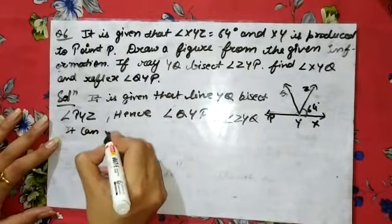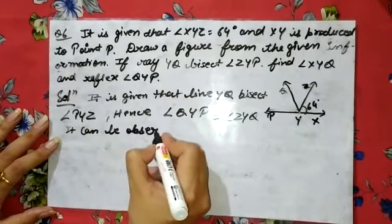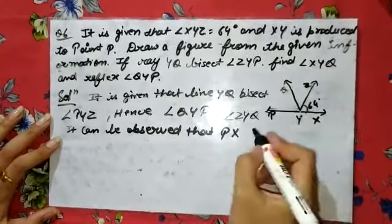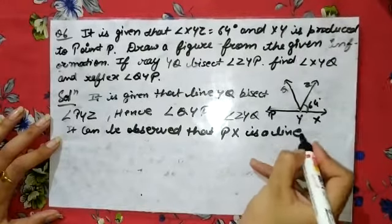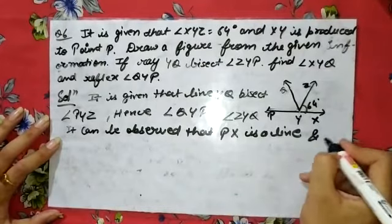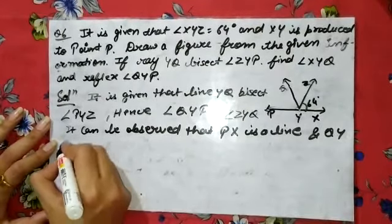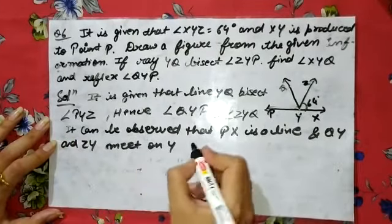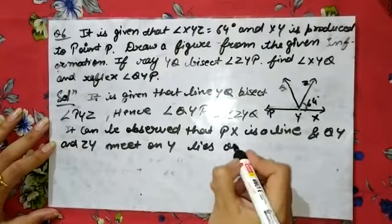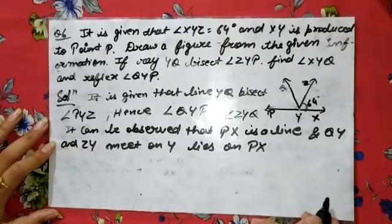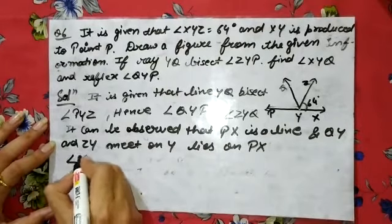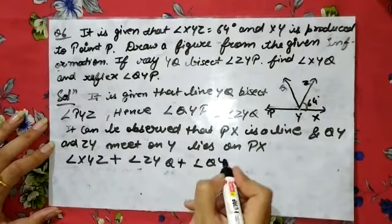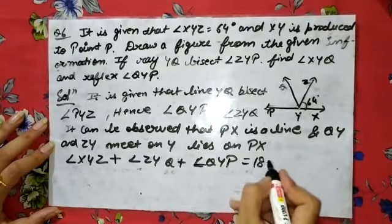It can be observed that PX is an extended line, so the sum of all angles on it is 180 degrees. QY and ZY both meet on Y, which lies on line PX. Therefore, angle XYZ plus angle ZYQ plus angle QYP equals 180 degrees.